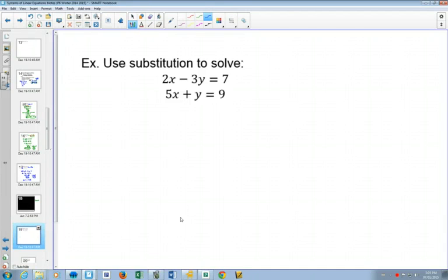First of all, which variable is easiest to get all by itself? Y. A Y in which equation? Equation one? Equation two. And in second equation, the Y is easy to get by itself. You just have to subtract 5X on both sides.